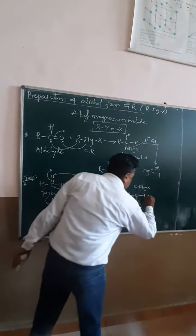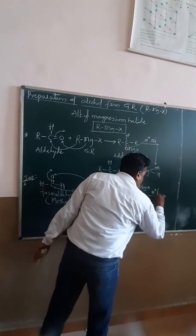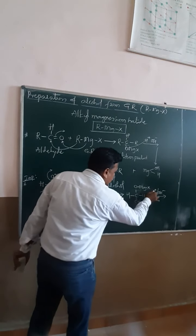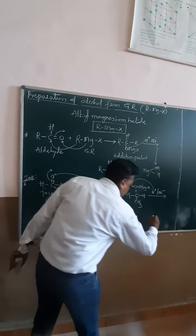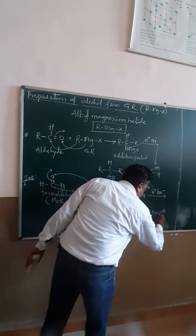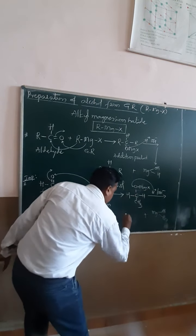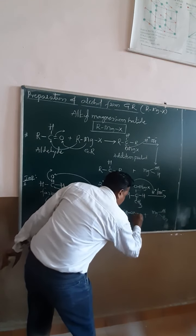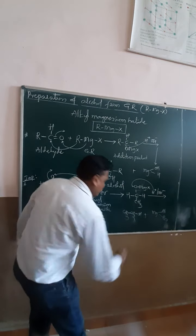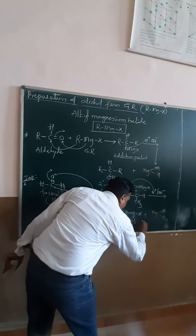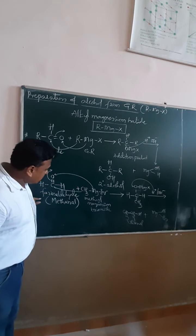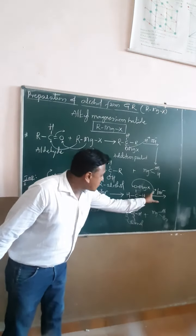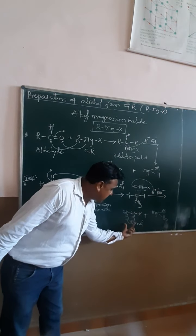Then it undergoes acid hydrolysis with H⁺ and OH⁻, causing cleavage of the O-Mg bond. The target compound formed is CH₃-CH₂-OH, which is ethanol — a 2-carbon compound. Formaldehyde undergoes reaction with Grignard reagent to form an addition product, followed by acid hydrolysis to form ethanol.